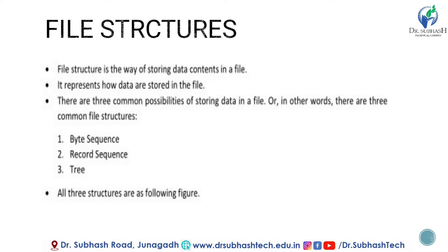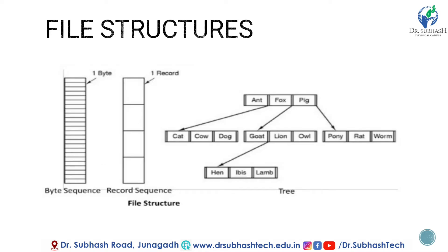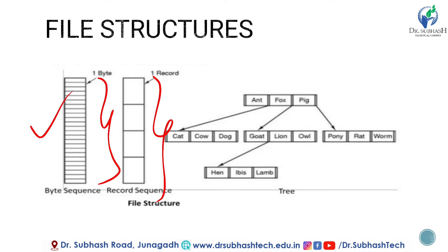All three structures are shown in the following figure. Here it is — this is a byte sequence, byte by byte. This is a record sequence, record by record, and this is the tree-like structure. So these are all three structures of a file: byte sequence, record sequence, and tree.